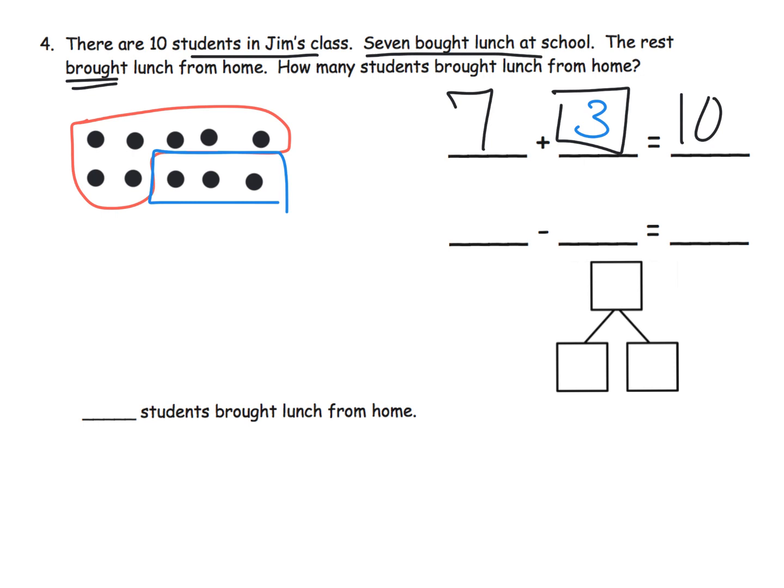But I think the most typical answer would be seven plus box equals ten. What would that look like as subtraction? It would be ten minus seven equals three. And the number bond would be ten, seven, and three. And of course, these two could be swapped if students wanted to. How many students brought lunch from home? And the answer, three.